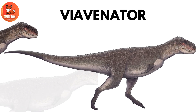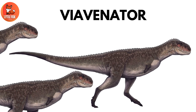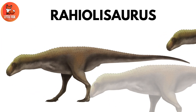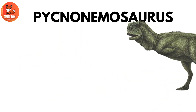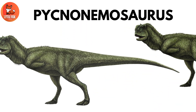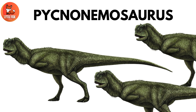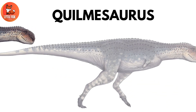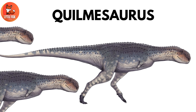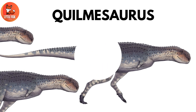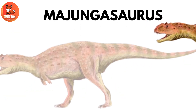Number 12: Viavenator. Number 13: Rohilisaurus. Number 14: Pichnonymousaurus. Number 15: Quilmasaurus.